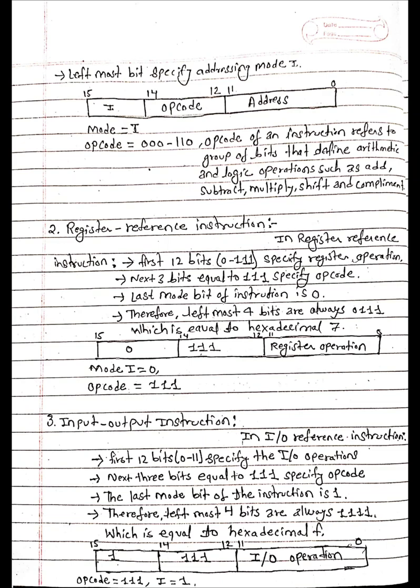In input output instruction, first 12 bits (0 to 11) specify the I/O operations. Next three bits equal to 111 specify opcode and the last mode bit of instruction is 1. Therefore, leftmost 4 bits are always 1111, which is equal to hexadecimal F. Opcode is 111 and mode addressing mode i is 1.